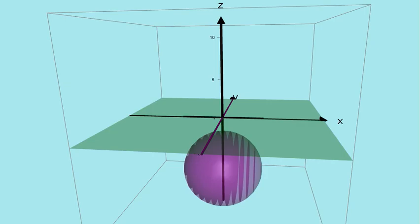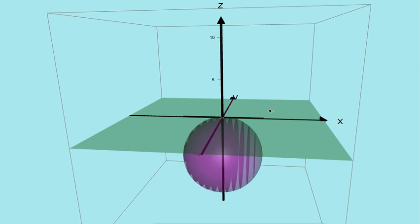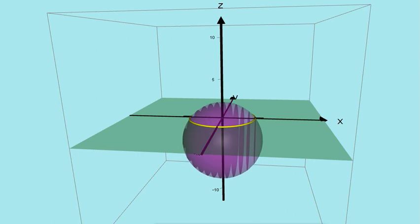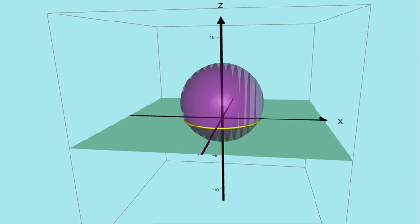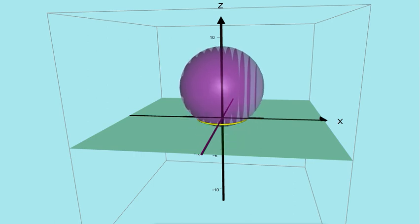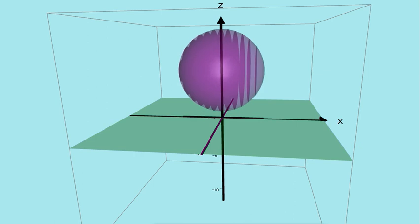Now watch as the sphere rises through the plane. There they would see that single point on their plane, and then they would start to see circles getting bigger and bigger, and then start getting smaller, until they completely vanish when the sphere is above their plane.